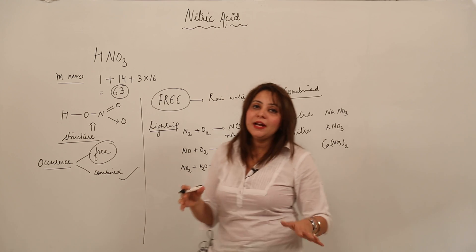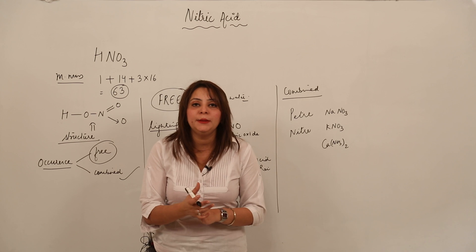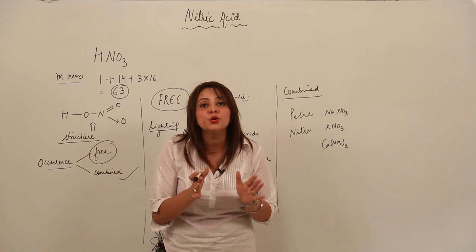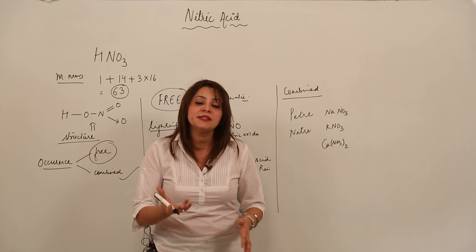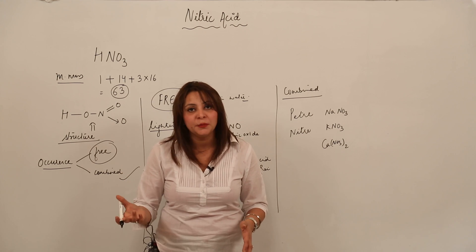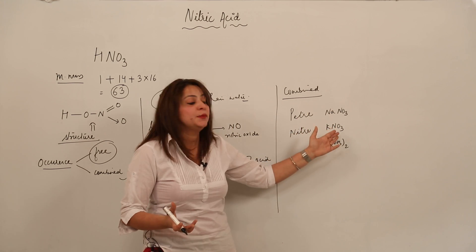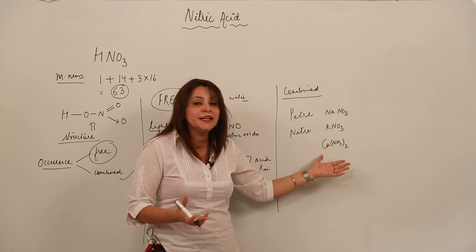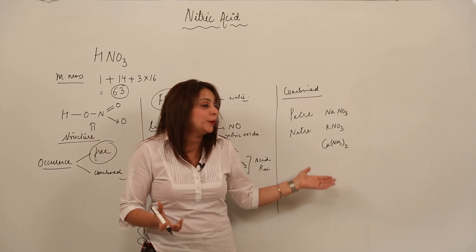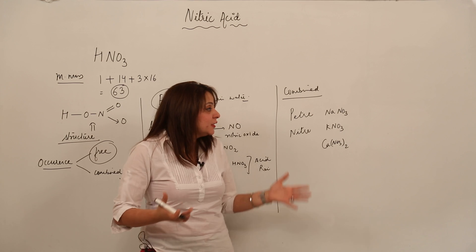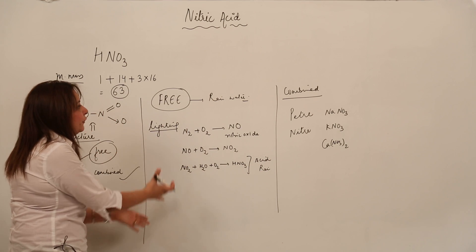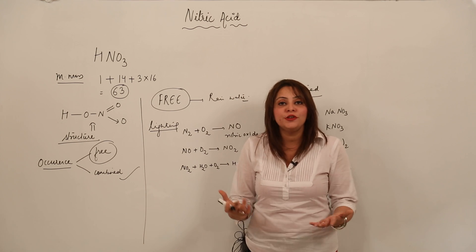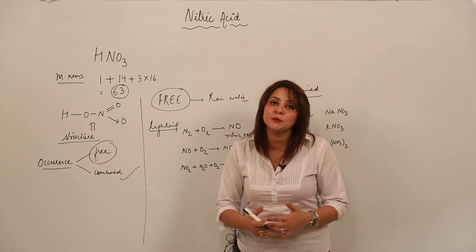Likewise, calcium nitrate also exists in nature, though it has no common name. Not every substance has both a common name and a chemical name — for example, calcium nitrate is referred to only by its chemical name. So nitric acid occurs in nature in free form as well as combined form. Next, we will start with its preparation in the lab as well as in industries.